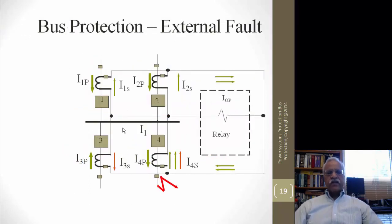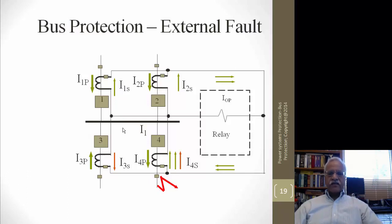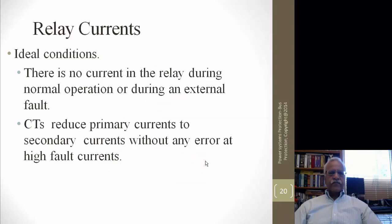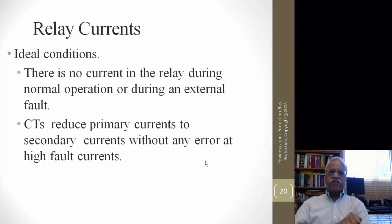For an external fault — a close-in fault outside the zone of protection just outside breaker 4 — I1P, I2P, and I3P come in and all four currents flow through breaker 4 into the fault. Adding these, the operating current is still equal to zero. This is the ideal situation where there is no current in the relay during normal operation or during an external fault. However, CTs have errors and transient behavior during faults is very different — there are DC offsets and the possibility of CT saturation.